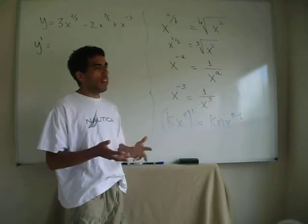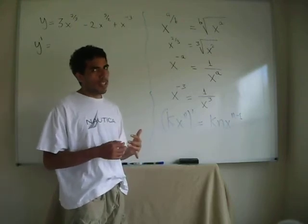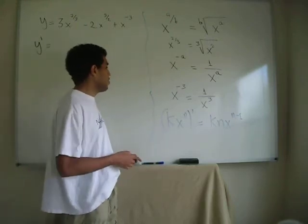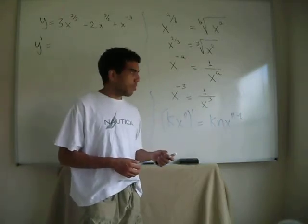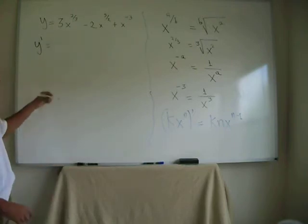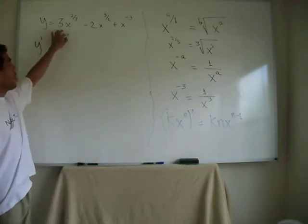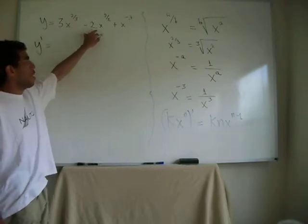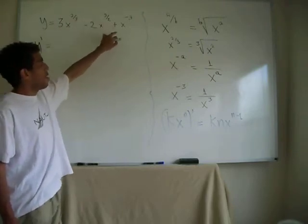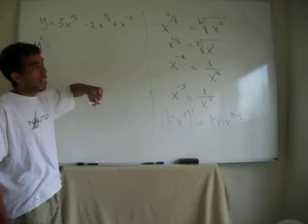It's just a mathematical rearrangement of the elements of the equation. So all we have to do next is use the kx power to n derivative rule. So what we're going to do with this example, y equals 3x power to two-thirds minus 2x power to five-halves plus x power to minus three.